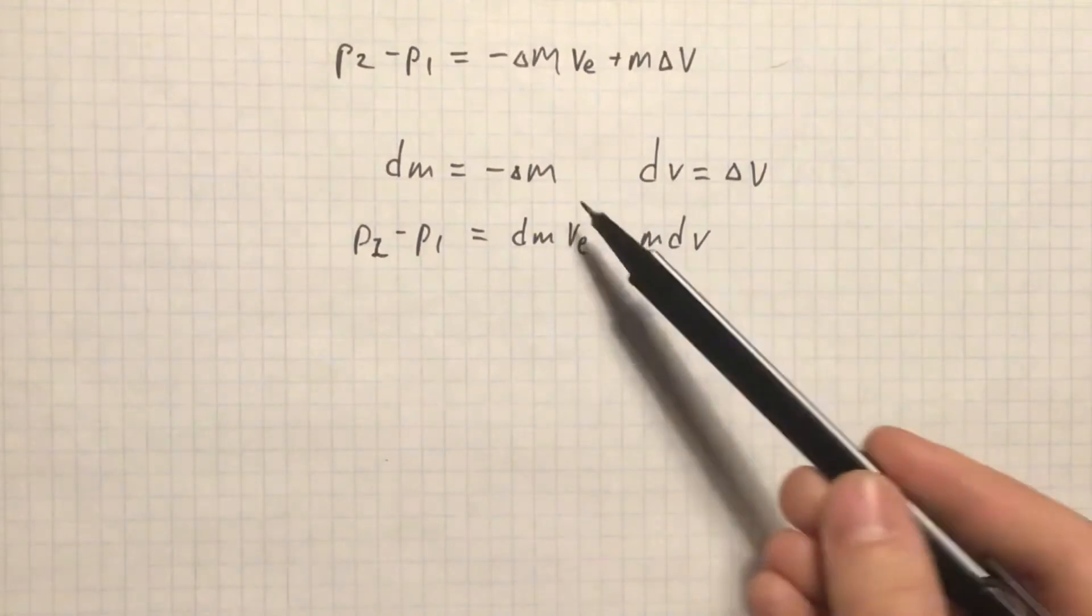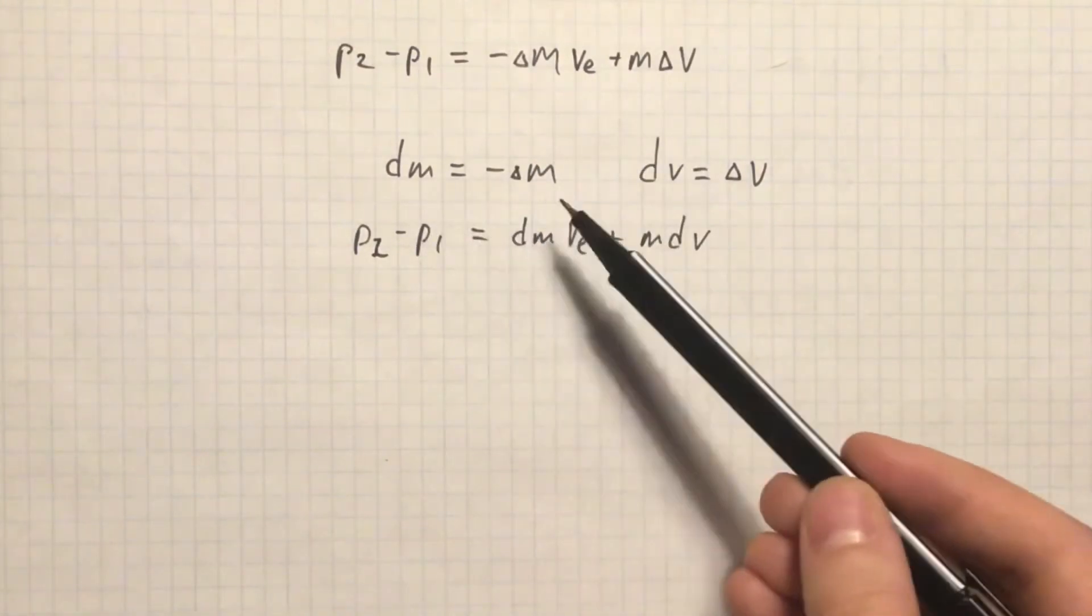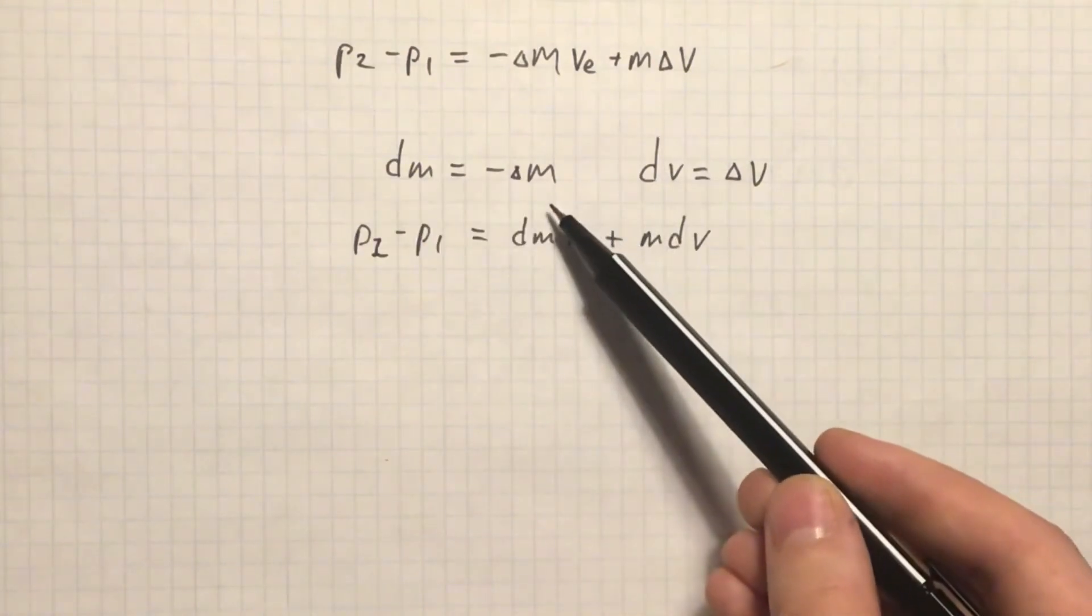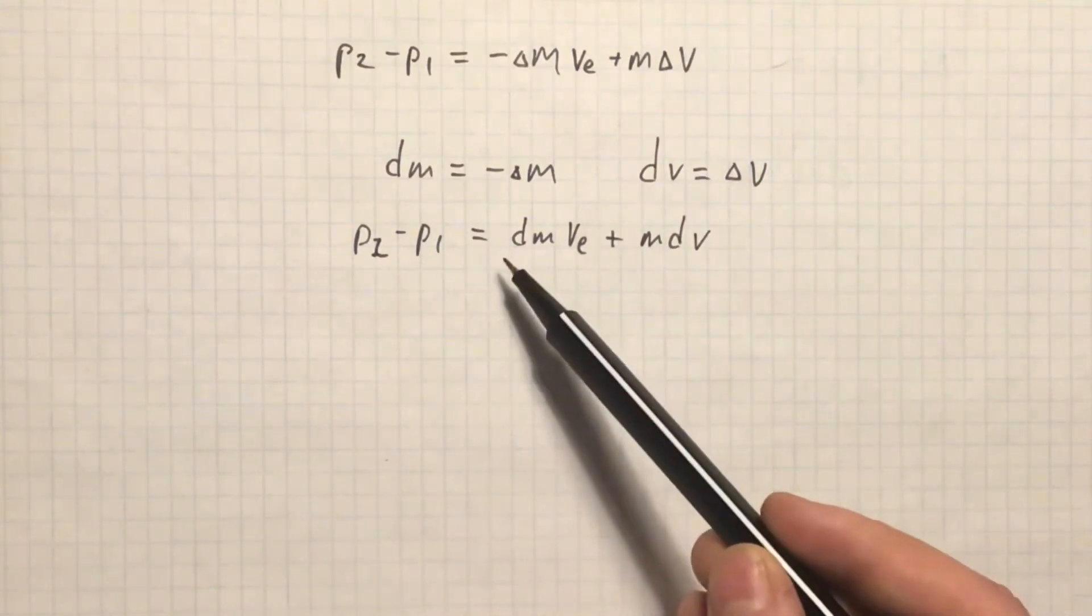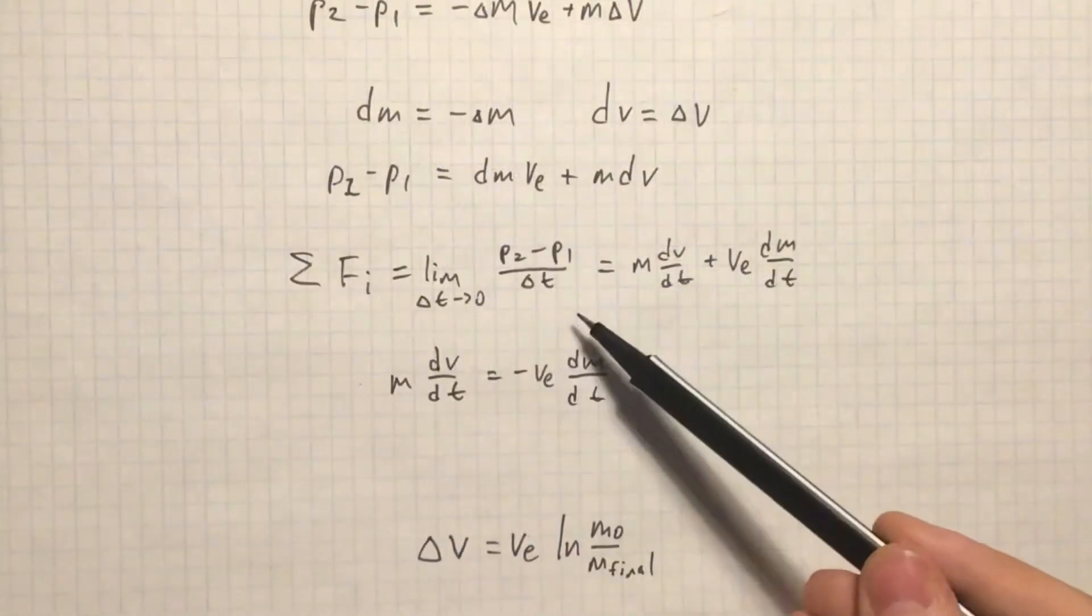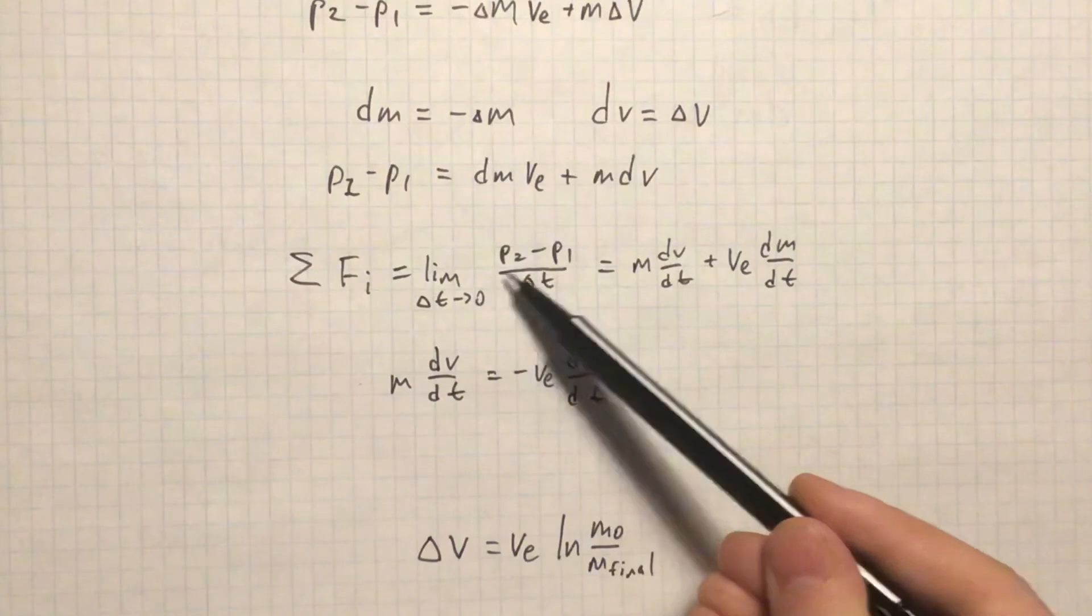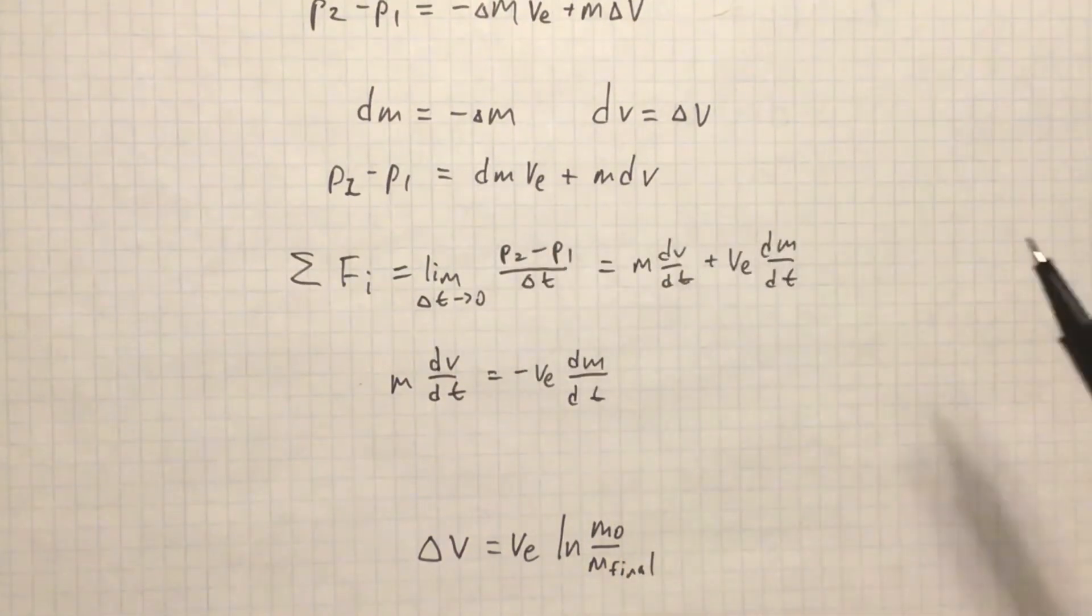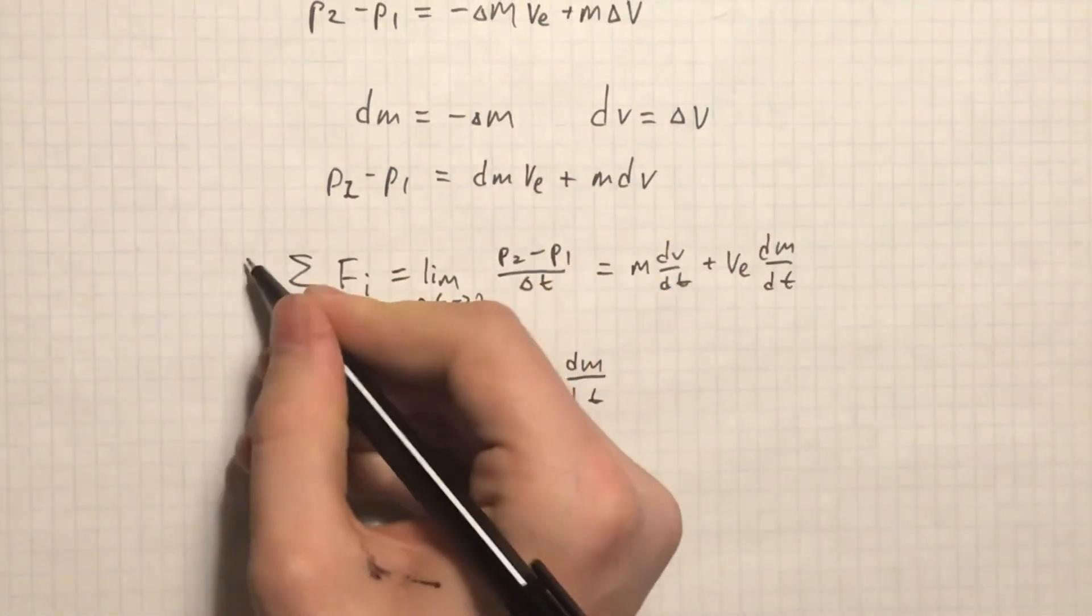Since positive delta m results in decrease of the mass of the rocket, we can substitute dm with minus delta m and dv with delta v. And we will get p2 minus p1 equals to dm v_e plus m dv. Now, we use Newton's second law of motion and instead of p2 minus p1, we substitute the obtained result. And assuming there are no external forces, so this equals to zero.